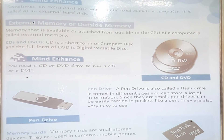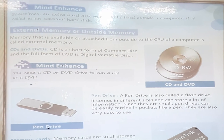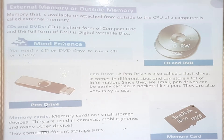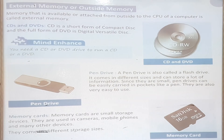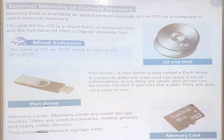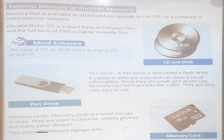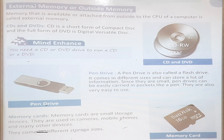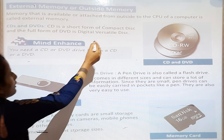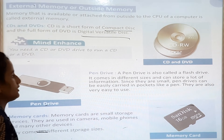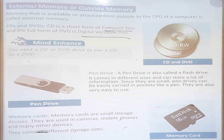External memory, or outside memory, is memory that is available or attached from outside to the CPU of a computer. For example, CDs and DVDs are external memory, while the hard disk is internal memory. CD stands for Compact Disk, and DVD stands for Digital Versatile Disk. These are the full forms of CD and DVD.